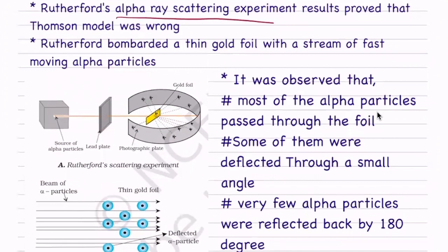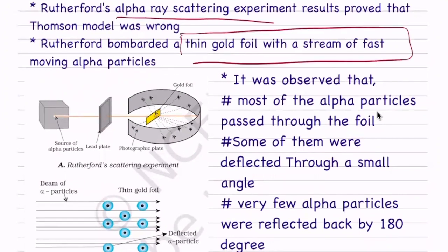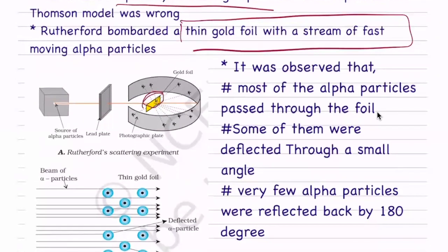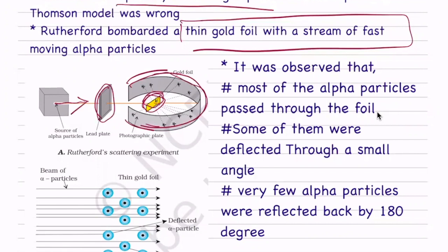Rutherford directed a thin gold foil in the stream of fast-moving alpha particles. Let's look at the diagram. There is a gold foil. There is a photographic plate, which is the zinc sulfate screen. There is a lead plate. The alpha particles pass through the lead plate and strike the thin gold foil. The alpha particles are fast-moving.